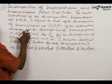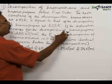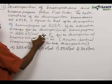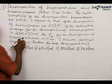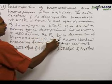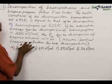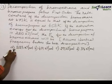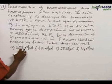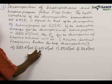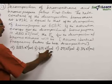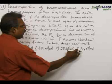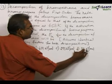If the activation energy for the decomposition of bromopropane is 200 kilojoule per mole, the activation energy for the decomposition of bromoethane will be, assuming identical frequency factors for both decompositions. The options are: a) 223 kJ/mol, b) 419 kJ/mol, c) 293 kJ/mol, and d) 314 kJ/mol.